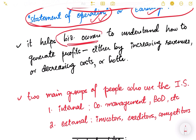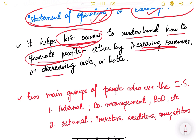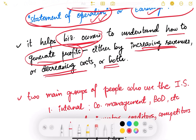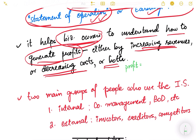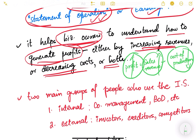The income statement helps business owners - the shareholders and owners of the company - understand how to generate profit, either by increasing revenue or by decreasing cost, or both. The simple formula is: profit equals sales revenue minus total cost of production. If you want to increase profit you have to either increase sales revenue or decrease cost of production. Looking at the income statement, you can see revenues, cost of production, and profit, and devise a strategy accordingly.